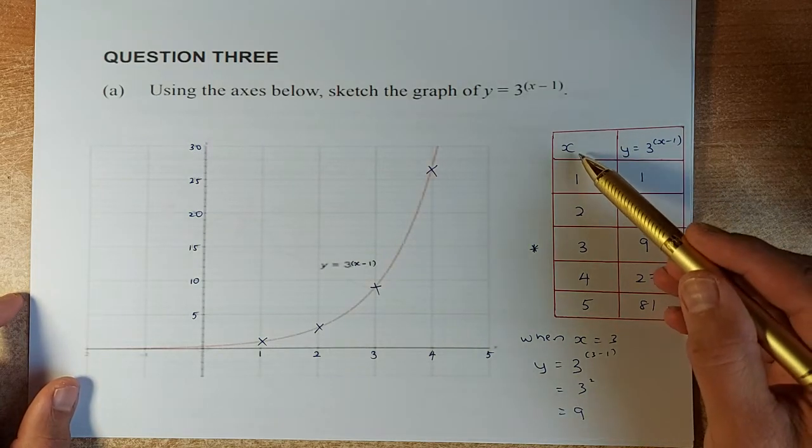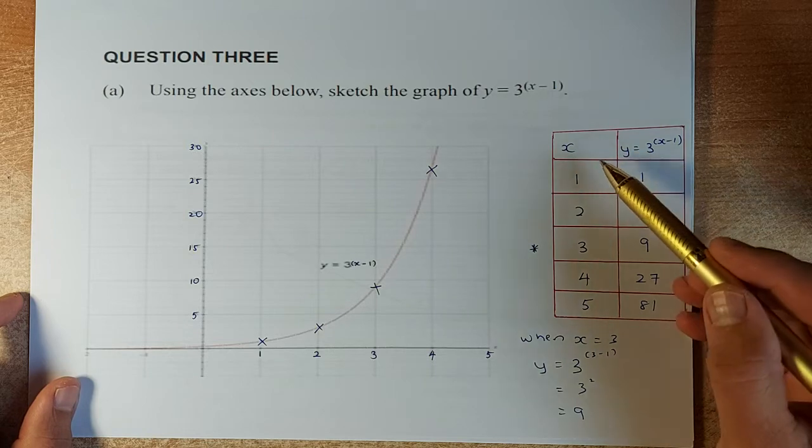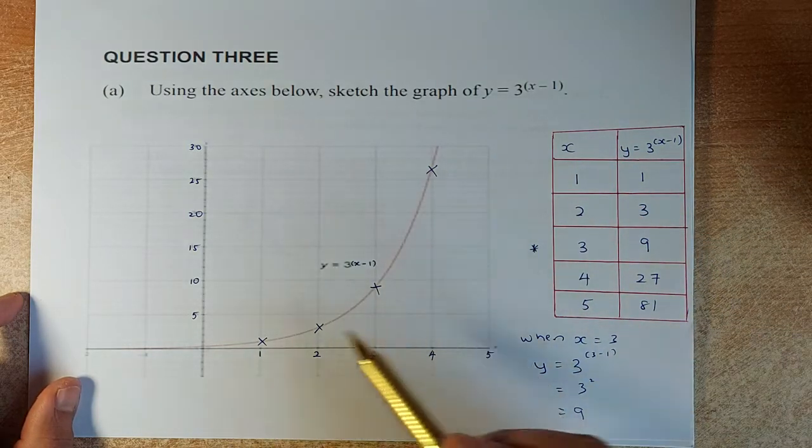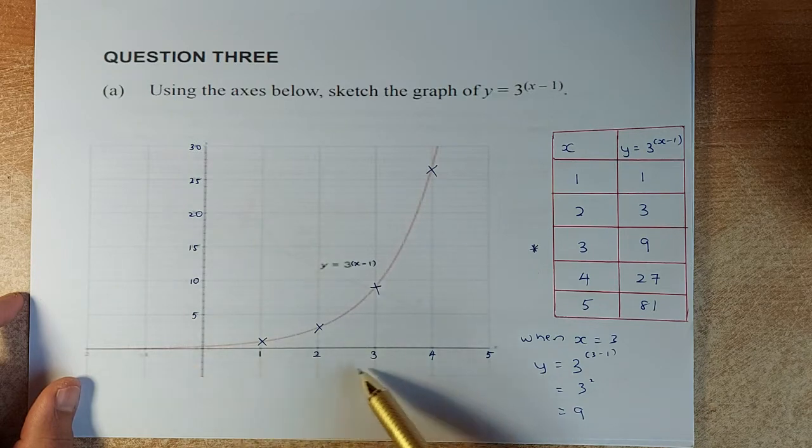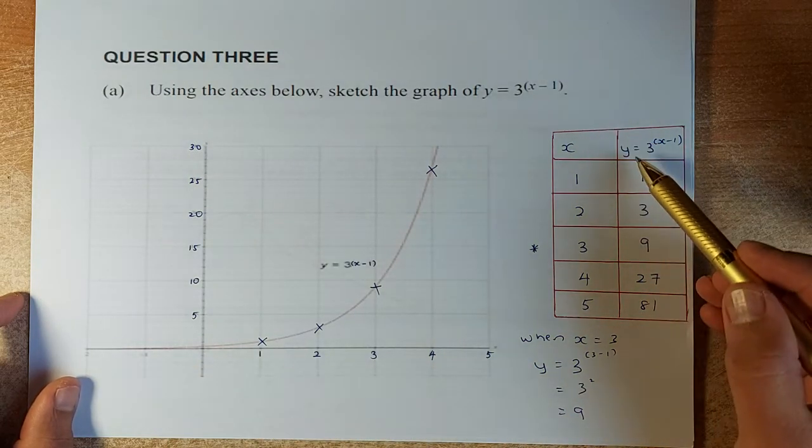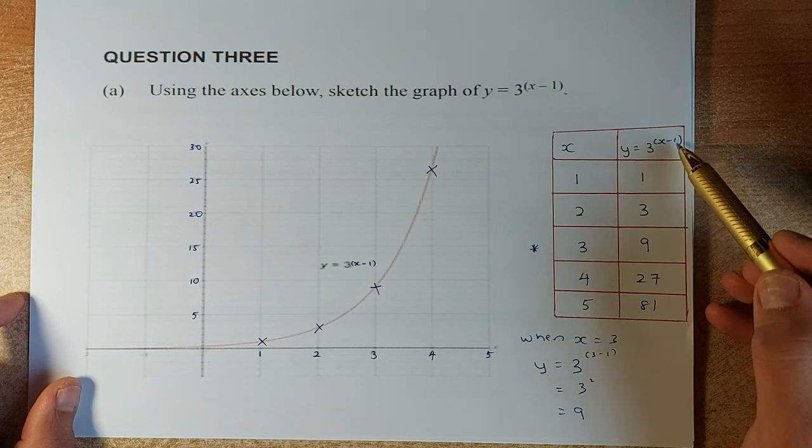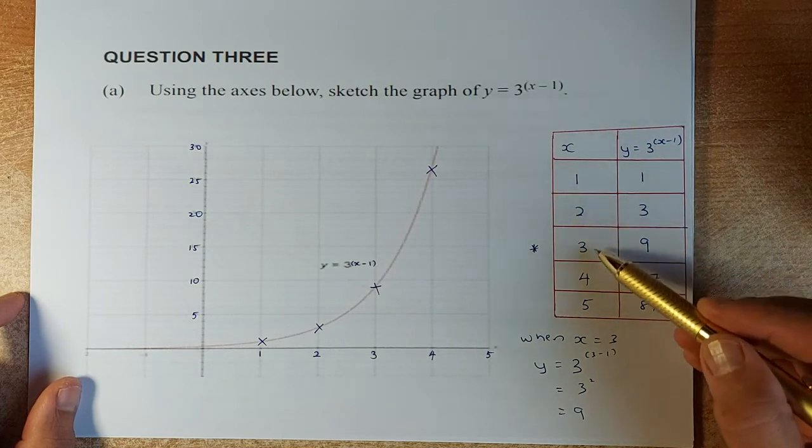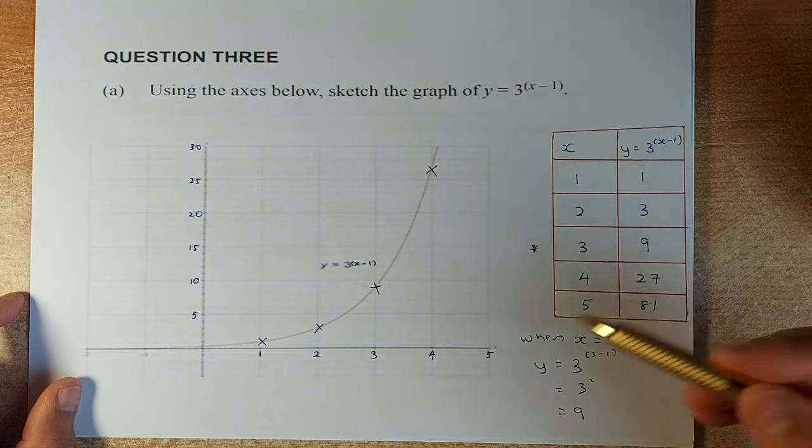So again, you put a column of x and y. For x, you can choose any number you like. Since this is a positive exponential, we're going to choose from 0, 1, 2, 3, 4 onwards. And for the y, the equation is 3 to the power of x minus 1. So we're going to substitute. We decide to choose 1, 2, 3, 4, 5 and see how it goes.